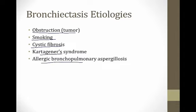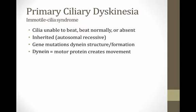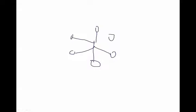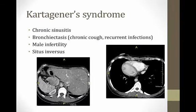Kartagener syndrome is part of a group of conditions called primary ciliary dyskinesia, also called immotile cilia syndrome. People with this problem have cilia that are unable to beat normally or may even be absent altogether. It's usually inherited in an autosomal recessive fashion, and all the gene mutations involve a protein called dynein — either the structure or formation of dynein is abnormal. Dynein is a very important motor protein that creates movement. Cilia are composed of circular structures called spokes connected by dynein arms, and this is what creates cilia that beat. In primary ciliary dyskinesia, dynein is either absent or abnormal.